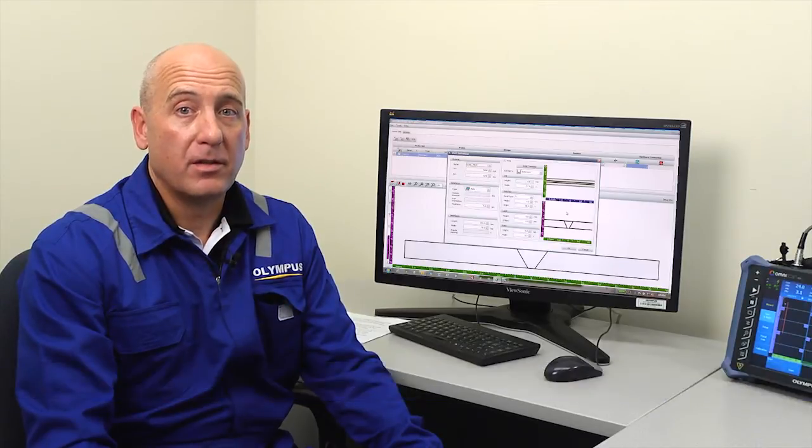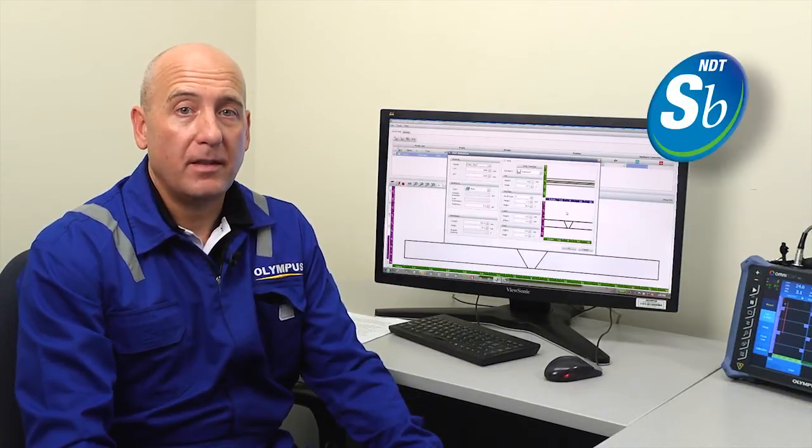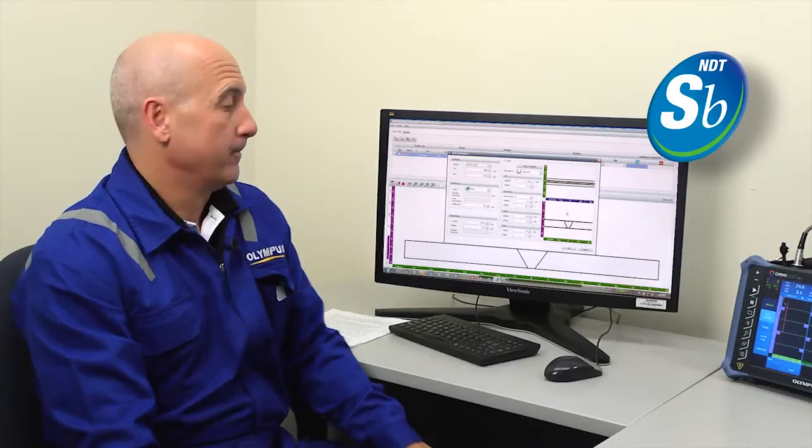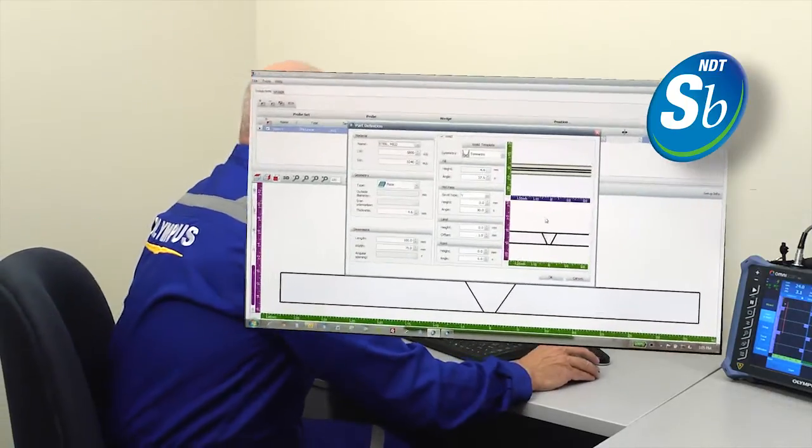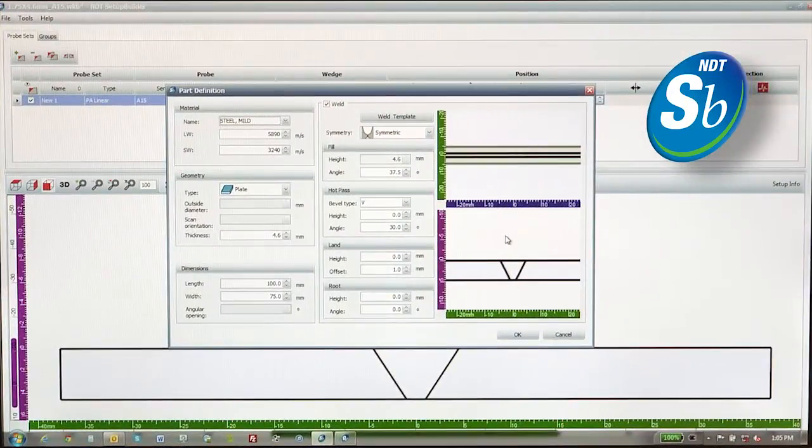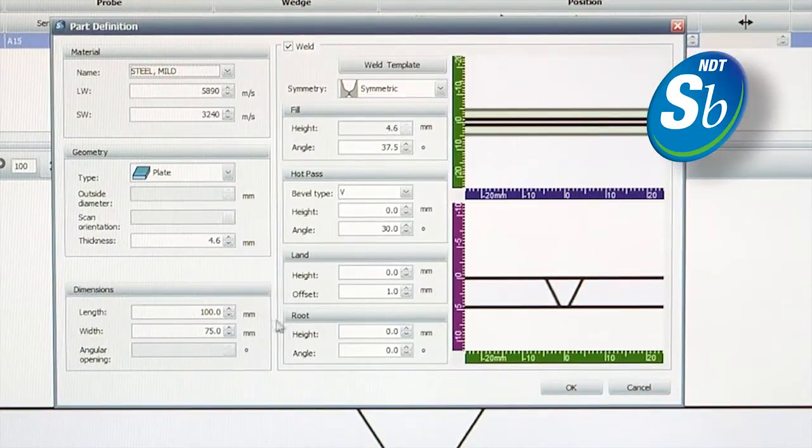Job engineering for advanced weld inspection using phased arrays starts with the configuration of the inspection strategy using the Olympus NDT setup builder. The setup builder allows the user to define the weld level and configure the position of the probes for creating the phased array inspection strategy.